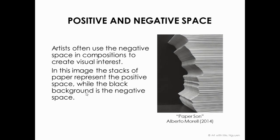Artists often use the negative space in compositions to create visual interest. In this image, the stacks of paper represent the positive space, while the black background is the negative space. Can you see the silhouette of a person on the edge? Perhaps that's why it's called Paper Sun.